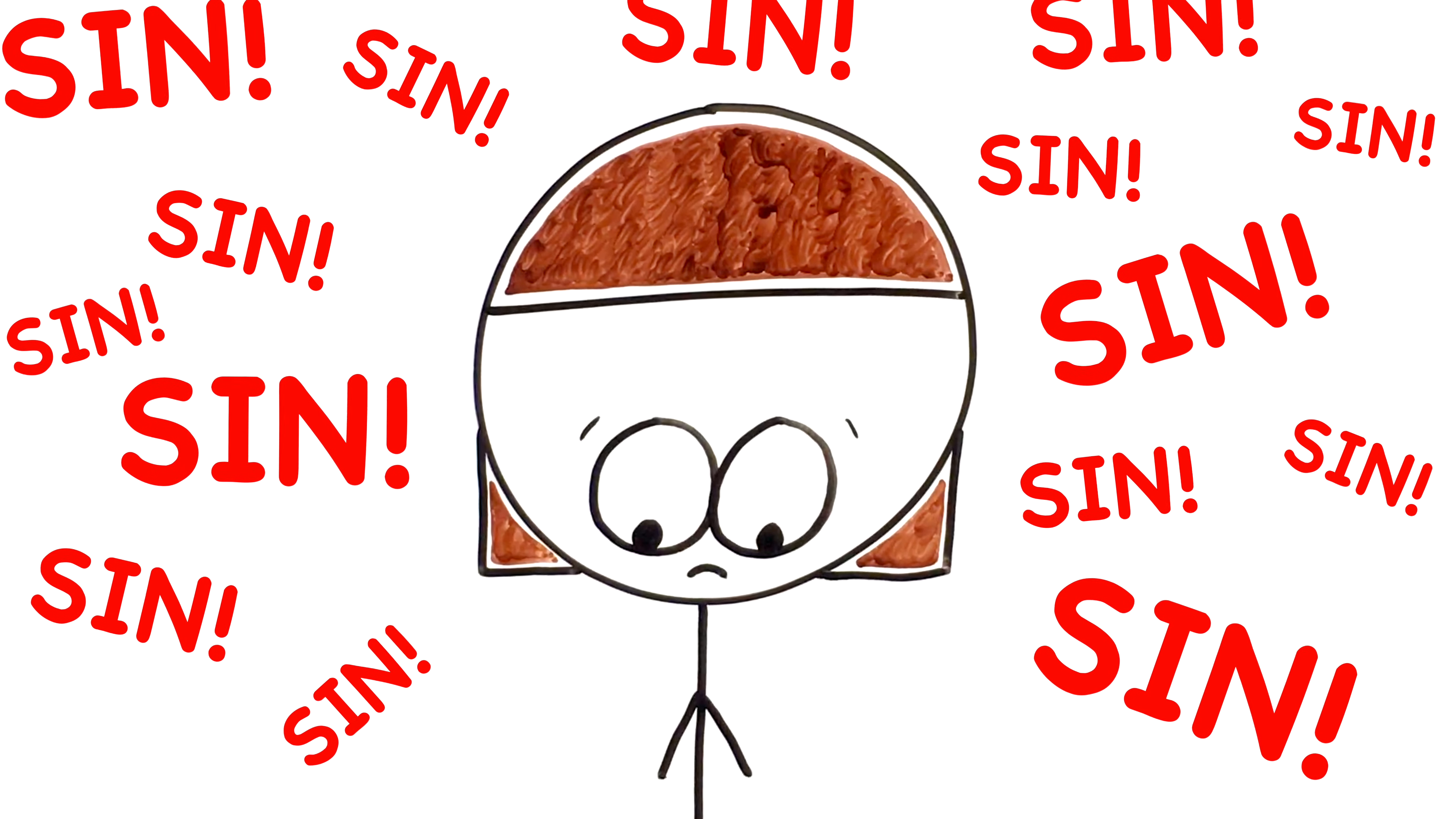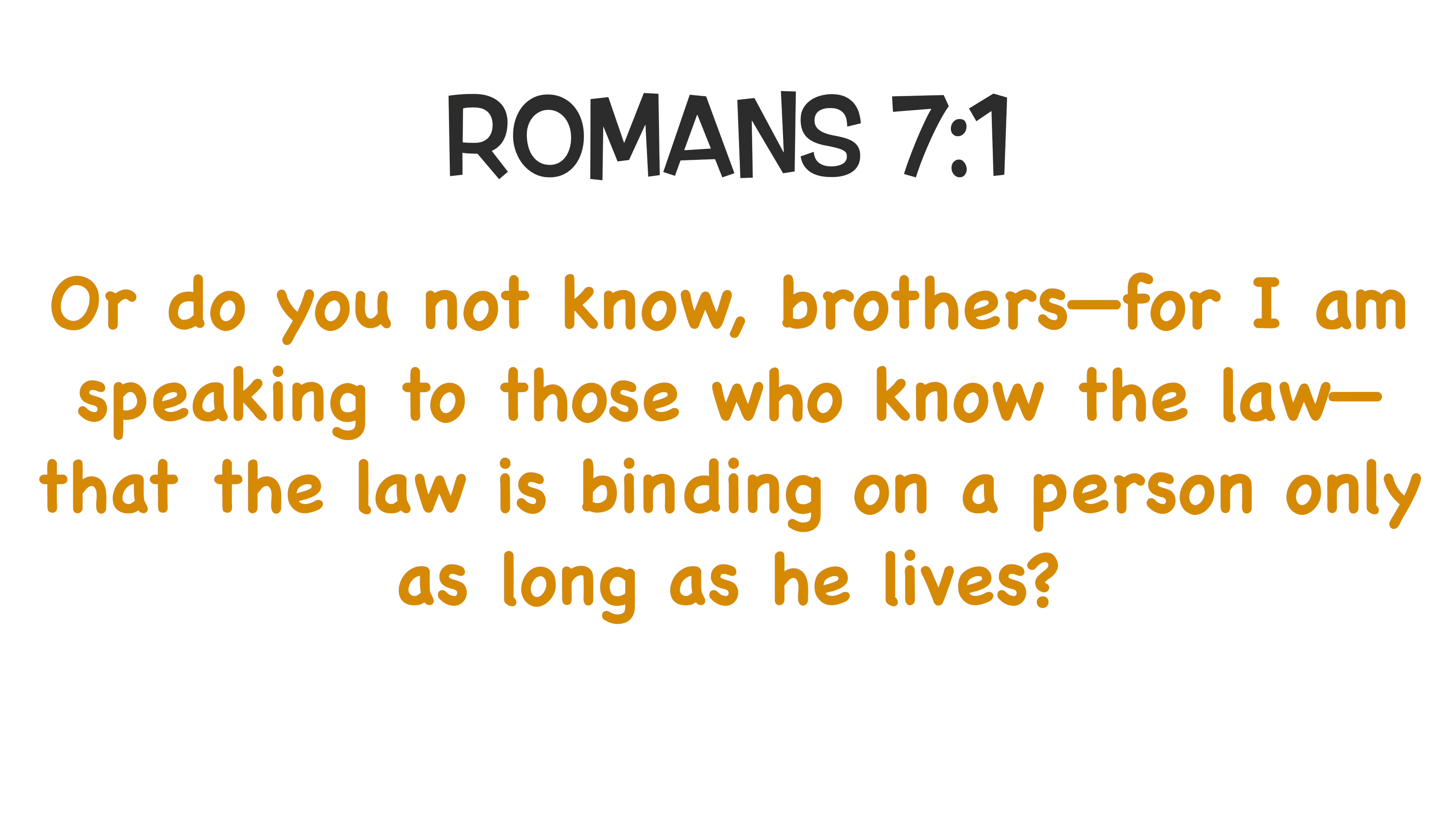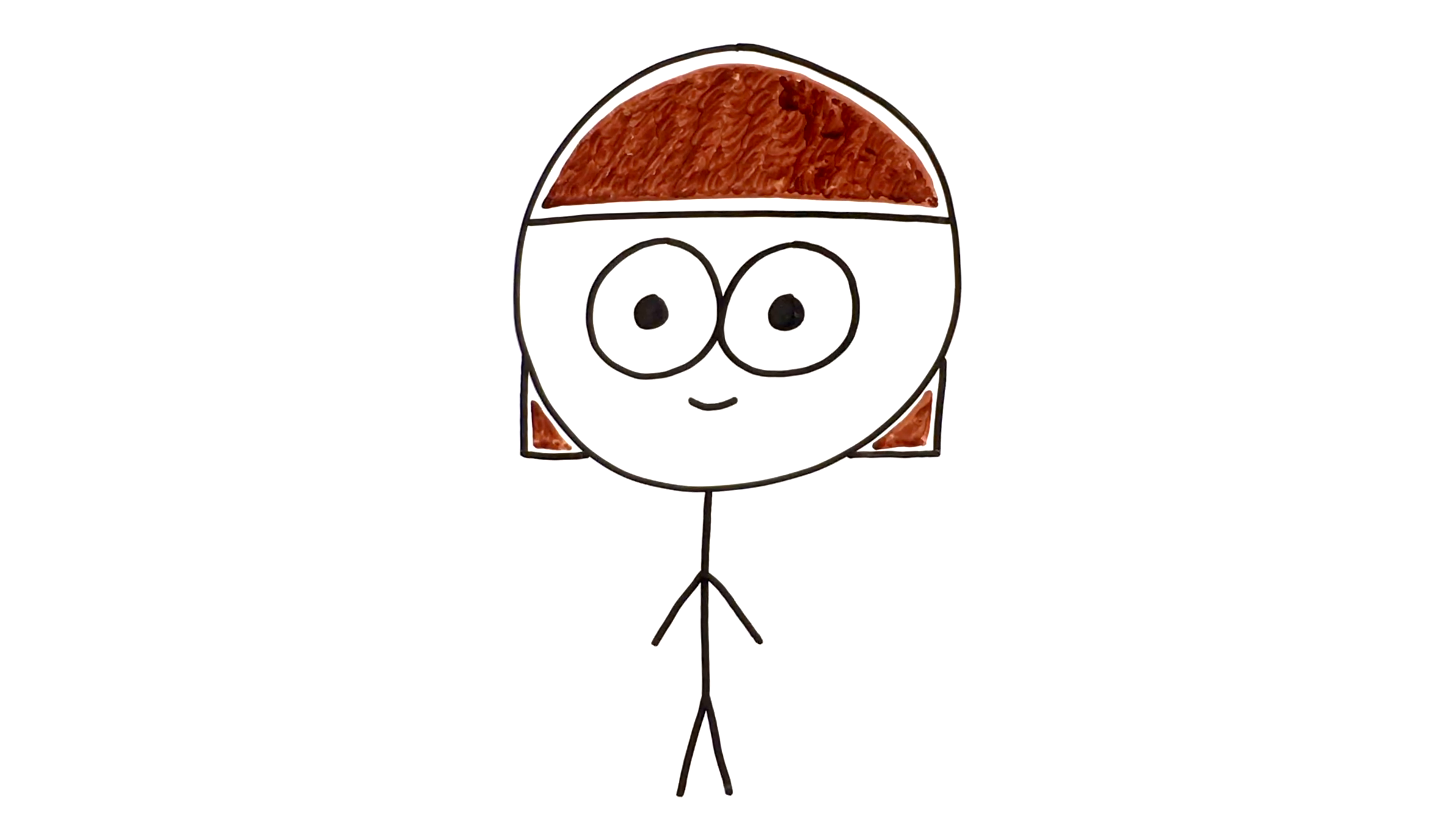The Jews needed to hear this. Now we know he's talking to the Jews directly here, and not the Gentiles necessarily, because he starts out chapter 7 by saying, Or do you not know, brothers? For I'm speaking to those who know the law, that the law is binding on a person only as long as he lives. Those who know the law is just a roundabout way of saying the Jews.